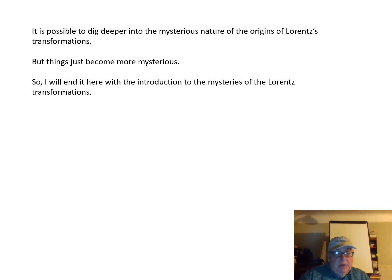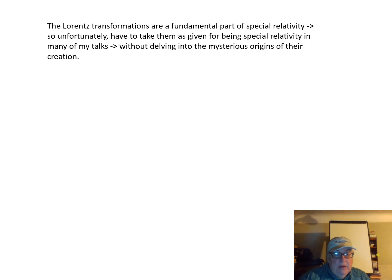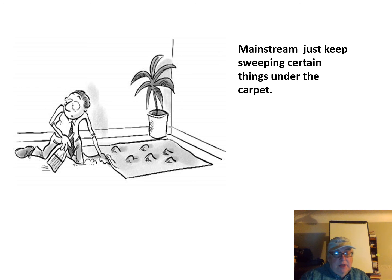It is possible to dig deeper into the mysterious nature of the origins of Lorentz transformations, but things just get more mysterious. I'll end here with this introduction to the mysteries of the Lorentz transformations. The Lorentz transformations are a fundamental part of special relativity, and unfortunately we often have to take them as given without delving into their mysterious origins. The mainstream tends to sweep under the carpet that Einstein was probably working from Voigt, that Voigt had mistakes in it, and that Einstein was incorporating those mistakes into his own theory. That's the end of this little talk. Thank you.